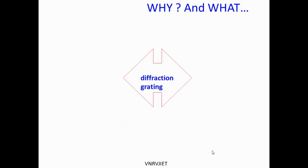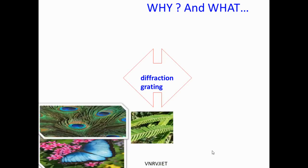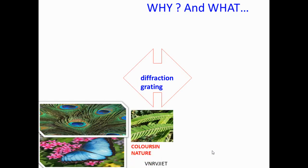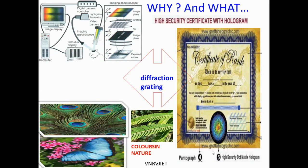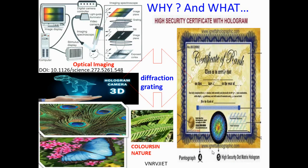Why do we learn multiple slit diffraction or grating experiment? In addition to the beauty seen in nature, holograms used in certificates and for various security reasons are a well-known application. In 2018, Chan Ethel suggested 3D sub-diffraction imaging from multiple slits at a microscope without image processing to achieve 3D super resolution imaging in biological specimens. The 3D hologram camera is also an application that uses the diffraction grating phenomenon. There are many such applications in daily life.